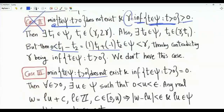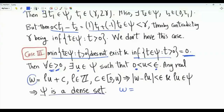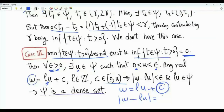The last case is when the minimum does not exist; there is an infimum and the infimum is exactly equal to zero. Take epsilon strictly positive. Since the infimum is zero, we can always find a positive u in epsilon such that u is between zero and epsilon. Take any real number omega — we don't need it to be in psi. U is strictly positive. We can write omega as an integer l times u plus c, which captures the difference between omega and l·u, and c is strictly less than u. The magnitude of omega minus l·u is c, which is strictly less than u.